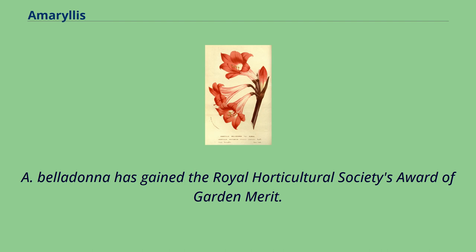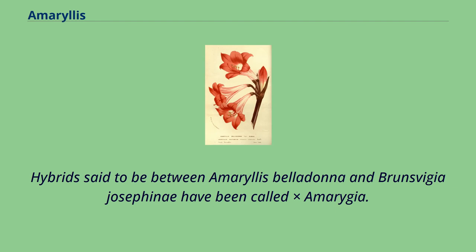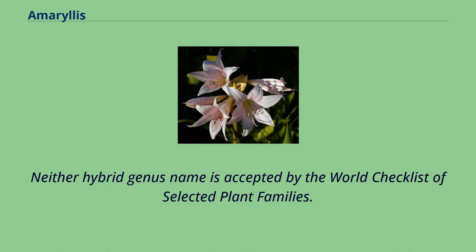Amaryllis belladonna has been crossed in cultivation with Crinum moorei to produce a hybrid called ×Amarcrinum, which has named cultivars. Hybrids said to be between Amaryllis belladonna and Brunsvigia josephinae have been called ×Amarygia. Neither hybrid genus name is accepted by the World Checklist of Selected Plant Families.